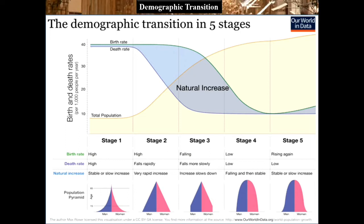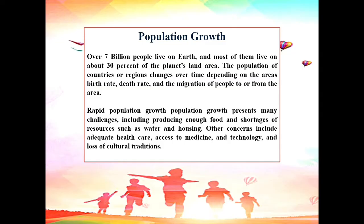The first stage has been called the high population growth potential stage. The second stage is the population explosion. The third stage is also characterized as a population growth stage because it continues to grow at a fast rate. The fourth is called the stage of stationary population, and the fifth is the stable or slow increase of population. Human population has grown exponentially over the past century. Over 7 billion people live on Earth, and the rapid population growth or overpopulation results in depletion of natural resources, degradation of environment, rise in unemployment, high cost of living, water shortage, pandemics, etc.